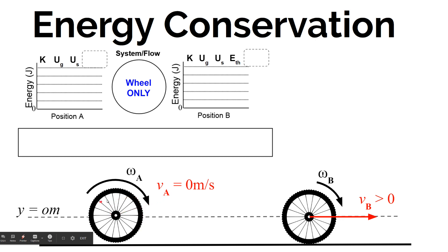If this wheel is spinning with some initial angular velocity and you just drop it, it's going to speed up and start rolling to the right across the floor. So at some later time and position, it's going to be moving at some translational velocity — its center of mass will be moving through space.